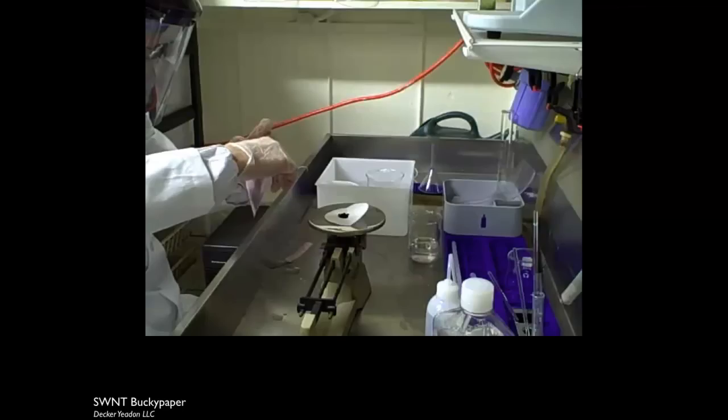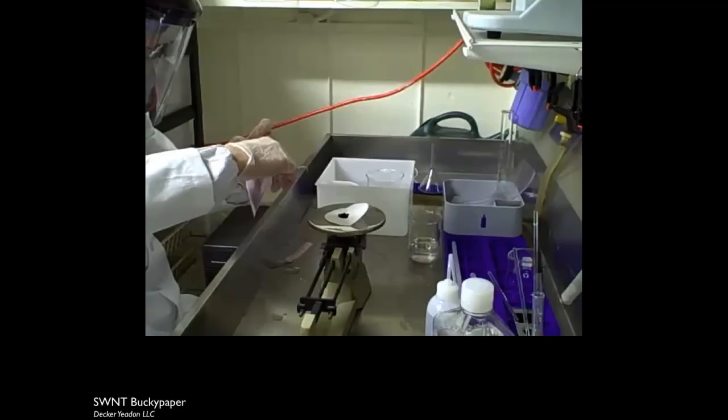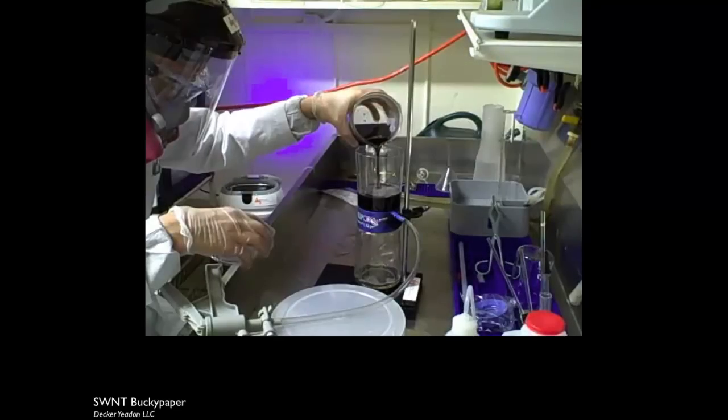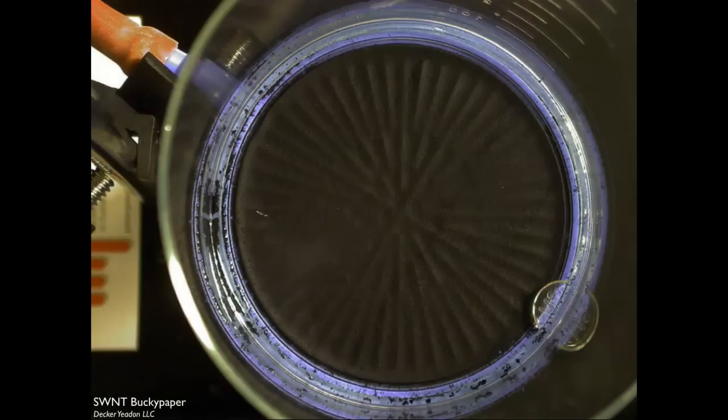After the first tests and the measurement of the conductivity, we wanted to create an electrode that is purely made out of carbon nanotubes. So we synthesized the bucket paper. Here you can see my partner Peter. First he measured out the carbon nanotubes, mixed them with water and a surfactant, sonicated the entire mix and then sent it through a filtration unit.